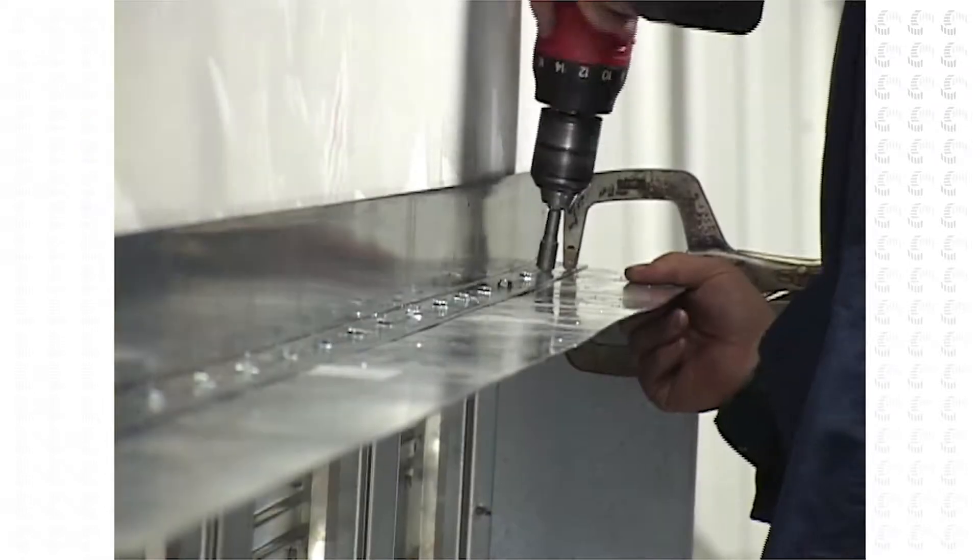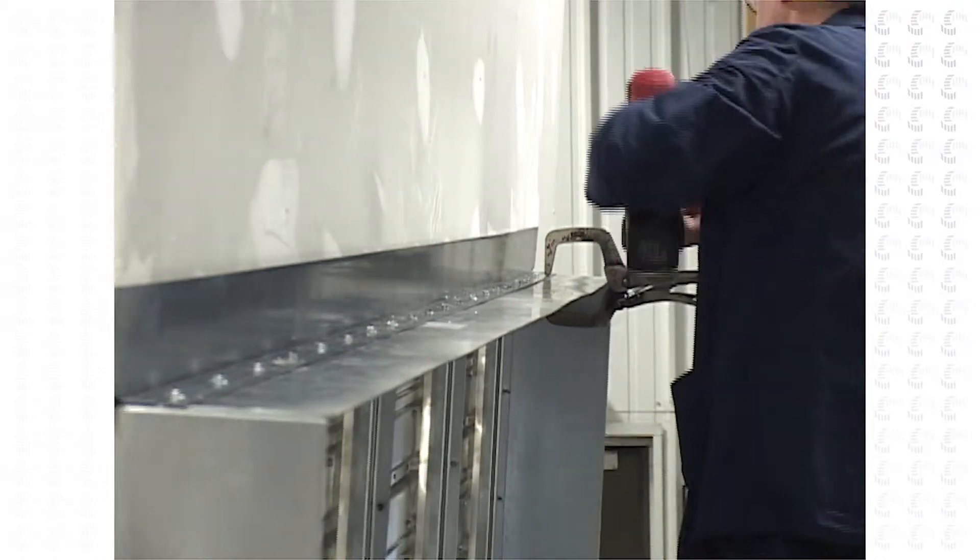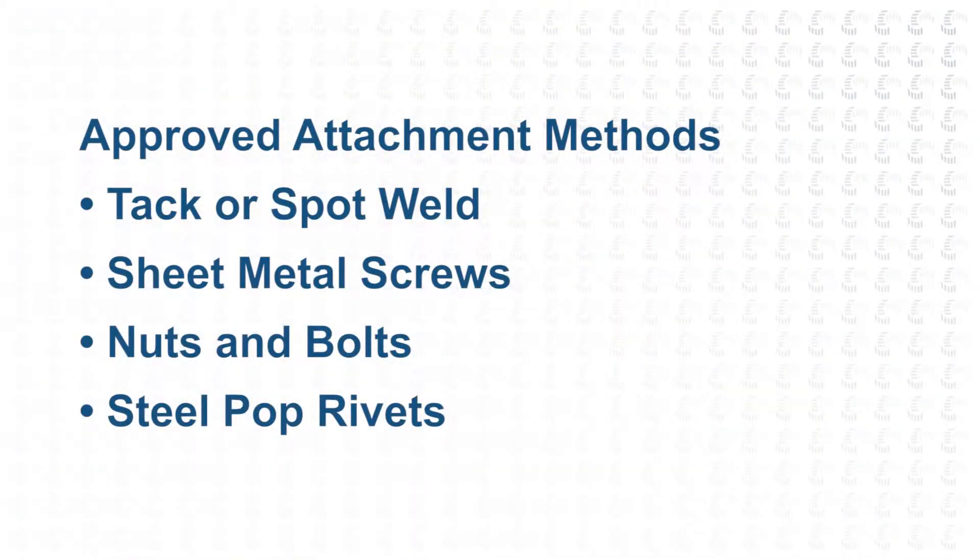Attach the retaining angles to the sleeve using one or more of the following methods: tack or spot weld, sheet metal screws, nuts and bolts, or steel pop rivets.